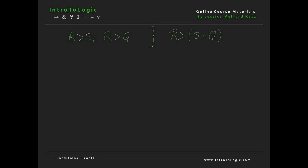Let's look at another example and practice conditional proofs. We have a sequent with assumptions on the left-hand side and a conclusion on the right-hand side. We draw a scope line and write our assumptions at the top: if R then S as our first assumption, and if R then Q as our second assumption. Then we write the conclusion we're trying to derive at the bottom, which is if R then S and Q.